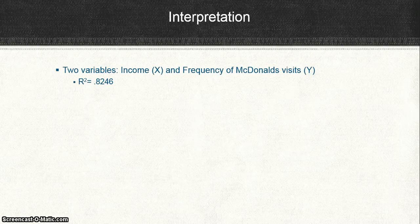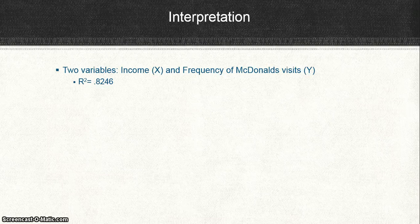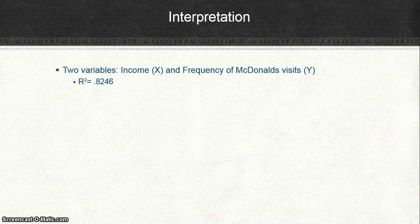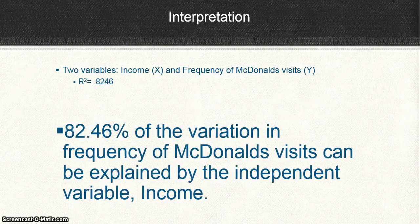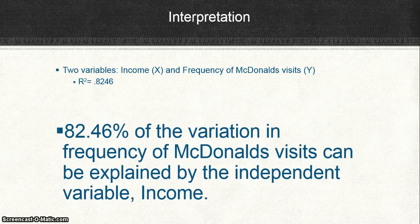Let's say you have two variables. Your income is your x variable, or your independent variable, and on the y-axis you have your frequency of McDonald's visits. That's your dependent variable, right? And we get an r squared value of 0.8246. And all AP Statistics wants you to know is how to interpret that. Well, how do you interpret that? Simple.